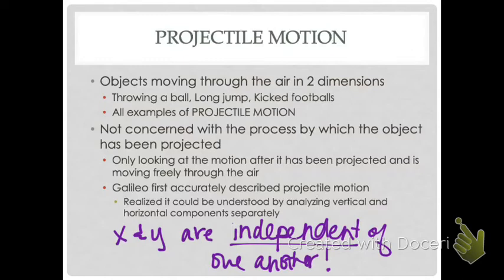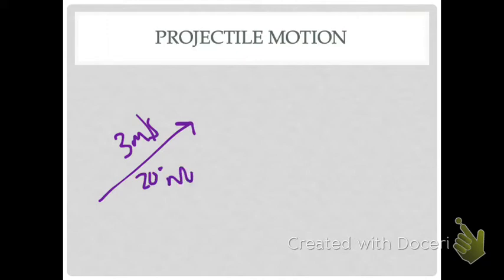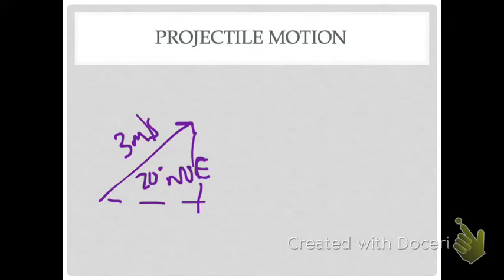Now think about your projectile motion equations: Y final equals Y initial plus VYI times T, VF equals VI plus AT — all of our kinematics equations are going to be applied in both the X and Y directions. We're going to have two sets of equations. That's why we looked at vector components — if an object is released at 3 meters per second at 20 degrees north of east, we can find its X velocity and Y velocity. We have to find horizontal and vertical velocity from the given angle.